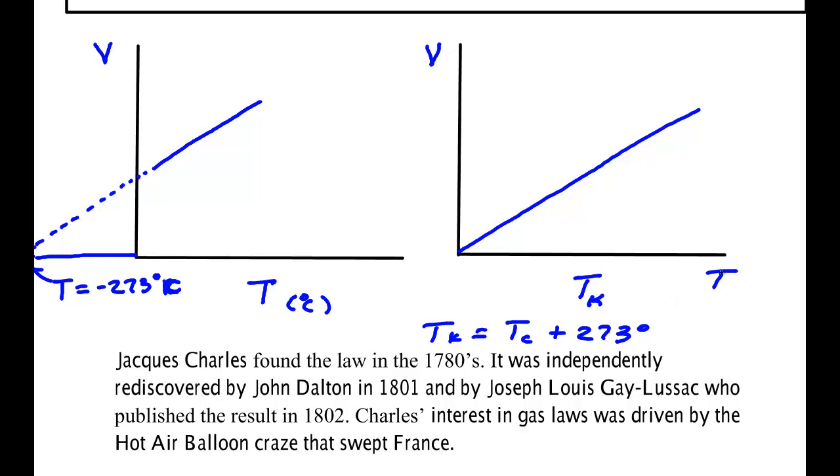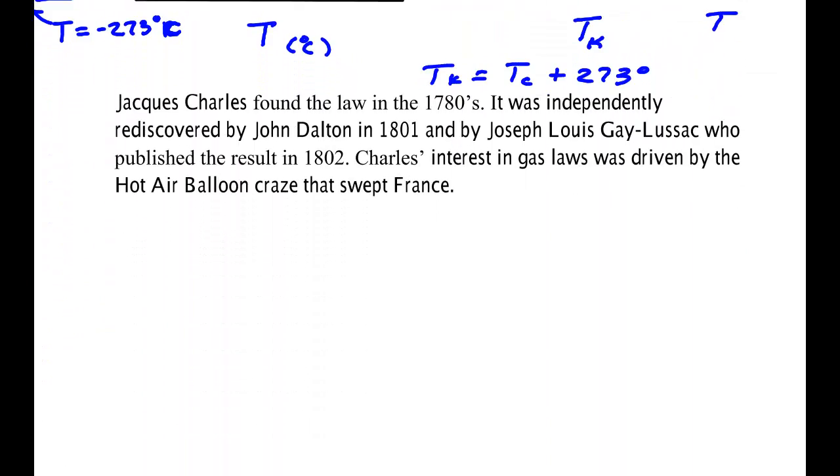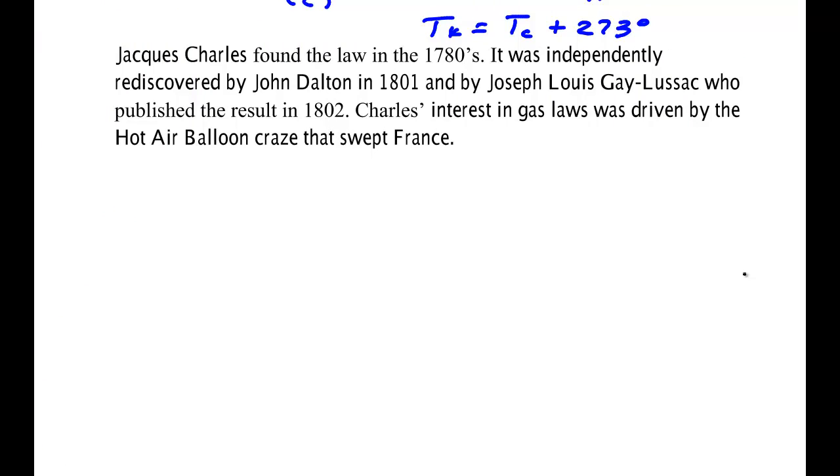Now what exactly this Kelvin scale told us was not understood at the time. But at least it made the formulas make sense. No matter what the slopes, all of them came into this point. So that's what you must use for the temperature in any of these gas laws. You can use different scales for pressure and volume, but not for temperature. Temperature must be read in Kelvin, not in Celsius.